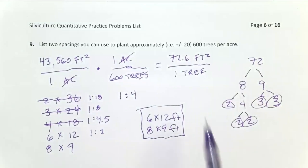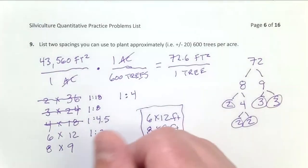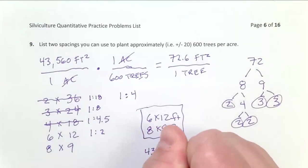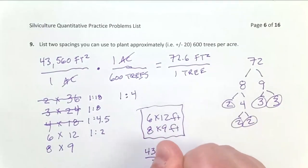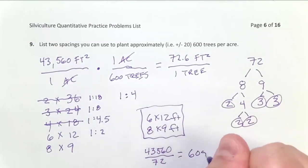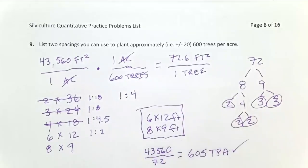Now what I want to check, I have to be within 20 trees per acre of 600. Let's see if that does it for us. So I'm using 72 instead of 72.6 square feet per tree. So the easy math to do for that is 43,560 divided by 72. And that's going to equal 605 trees per acre. I'm only off by 5. My tolerance is 20. So check, my spacing works.